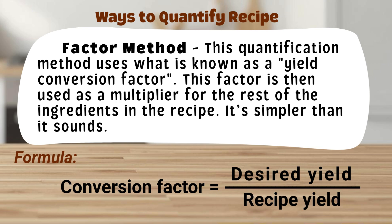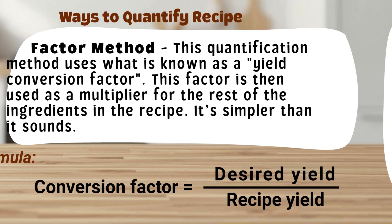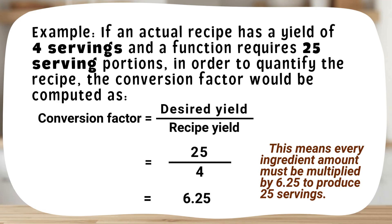Formula: Conversion factor equals desired yield divided by recipe yield. Example: If an actual recipe has a yield of four servings and a function requires 25 serving portions, in order to quantify the recipe, the conversion factor would be computed as: desired yield divided by recipe yield = 25 divided by 4 = 6.25. This means every ingredient amount must be multiplied by 6.25 to produce 25 servings.